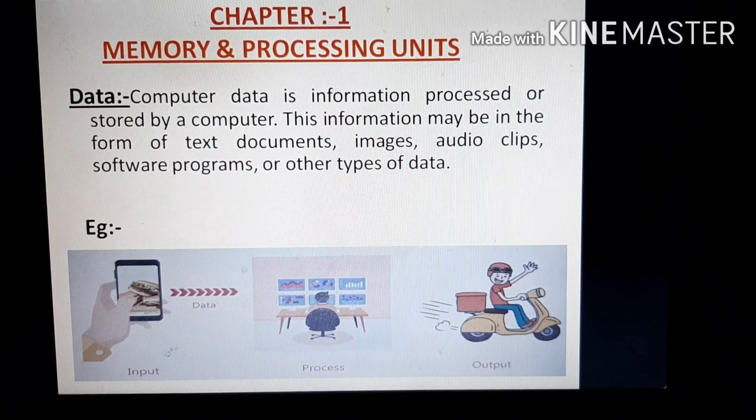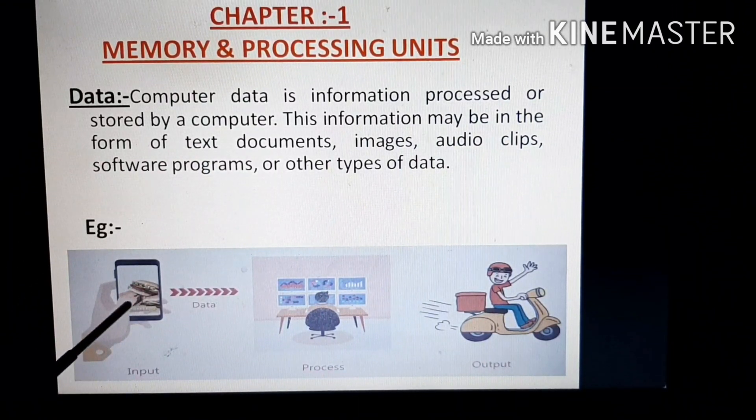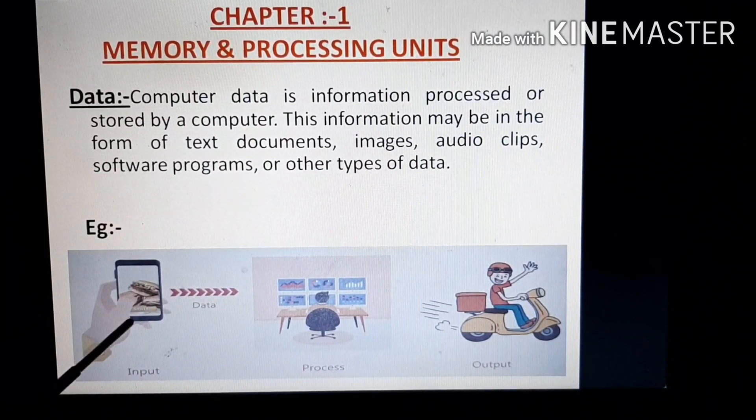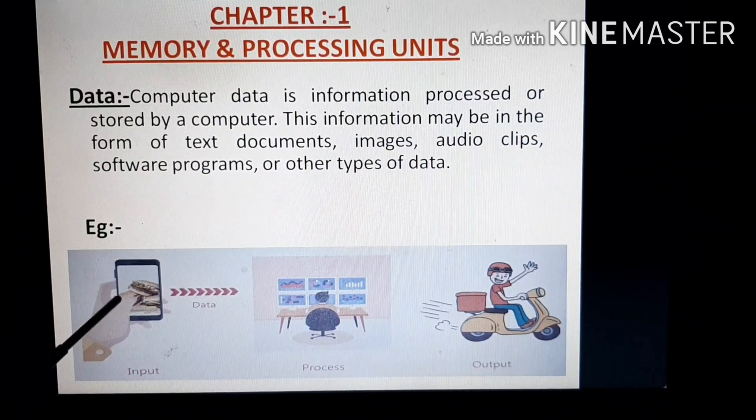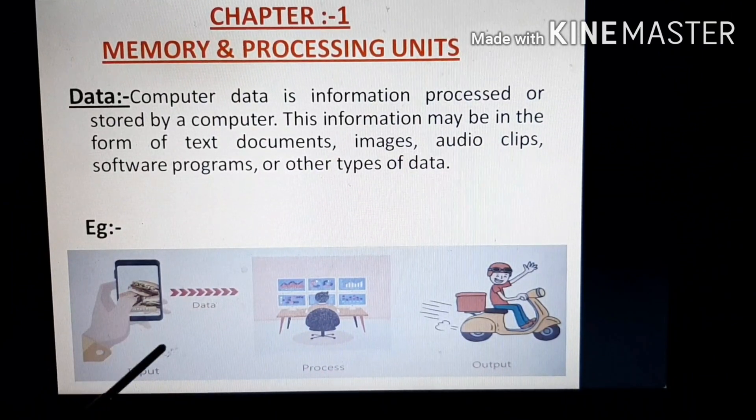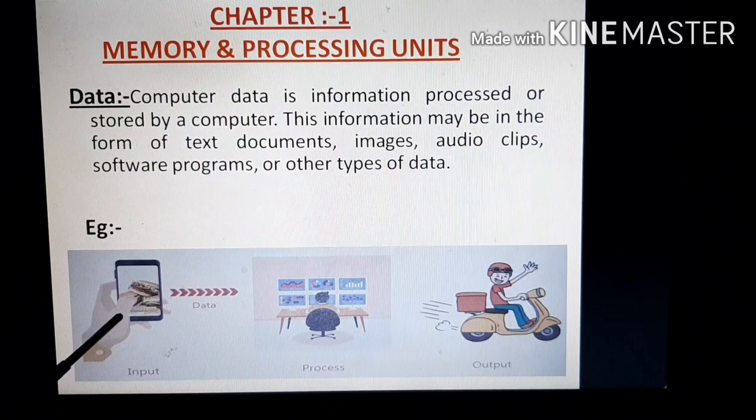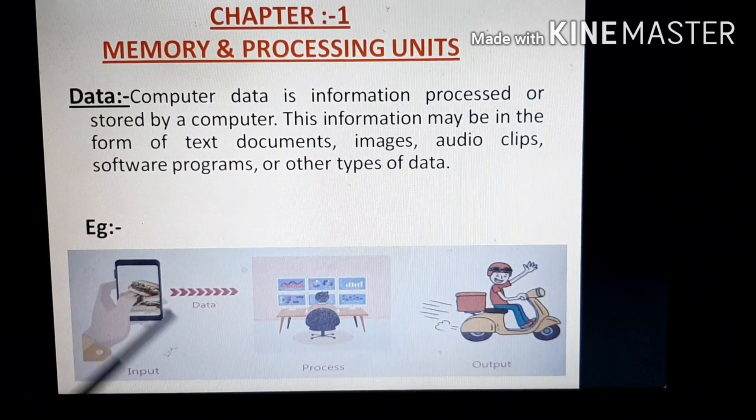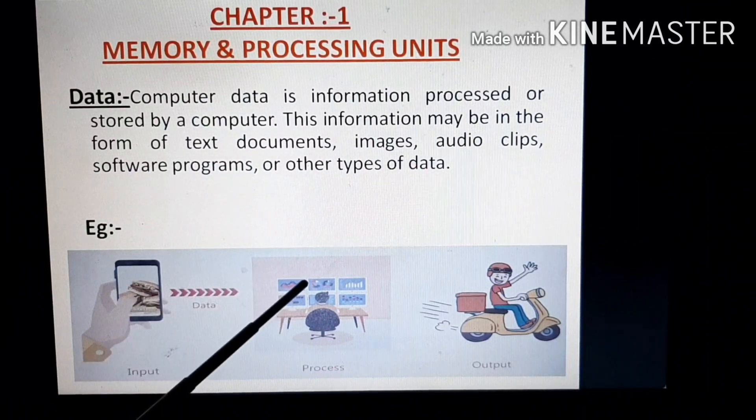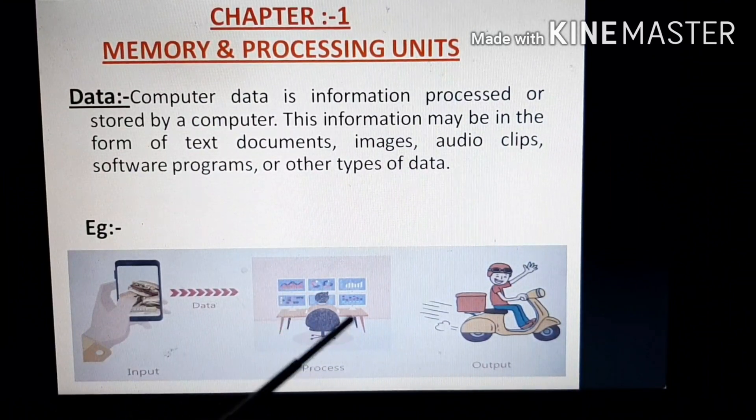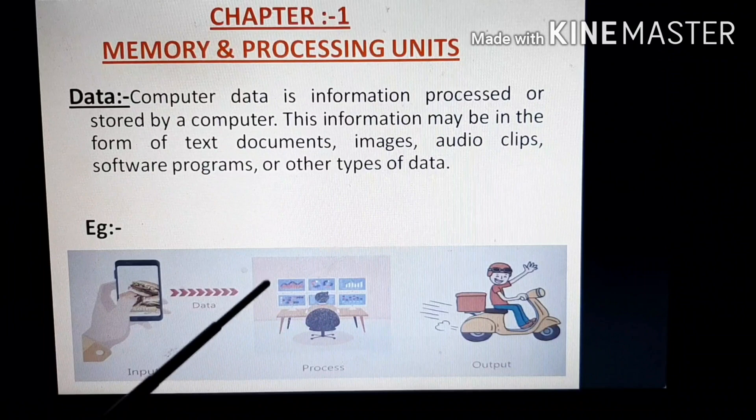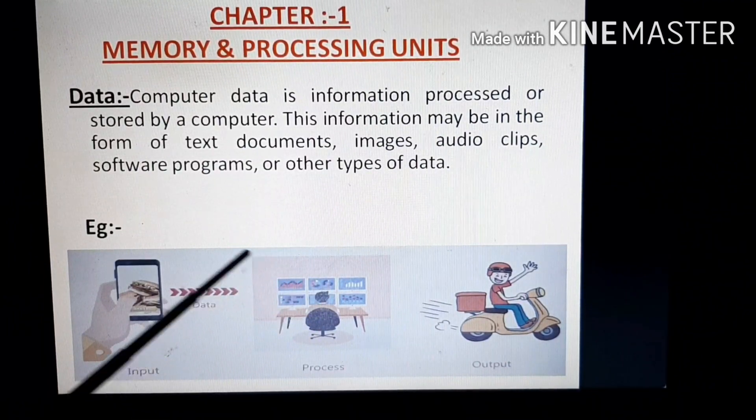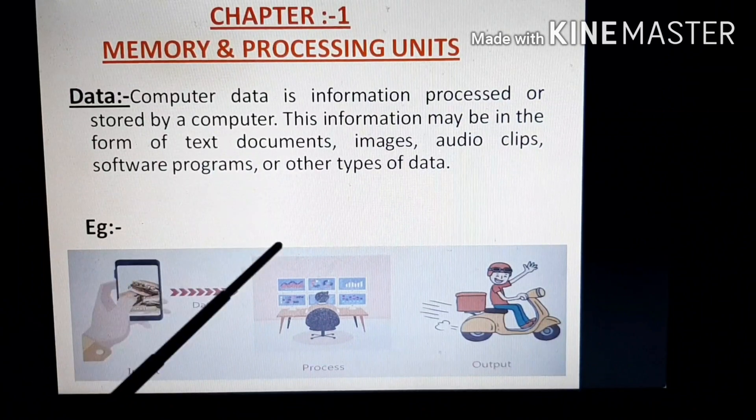As shown in the example, you can see this person is using an online site to order food. Suppose he has ordered something from a particular restaurant—that means he has given the input data by using the online app. After that, data is sent to the processing unit. So here the data is being processed, that means the ordered food is now sent to that particular restaurant and that restaurant is making the food or preparing the food.